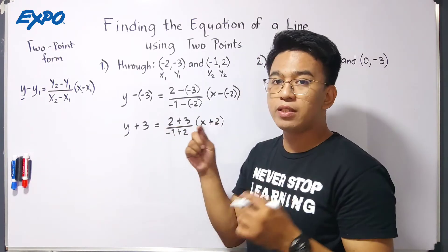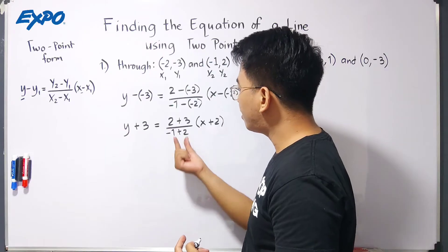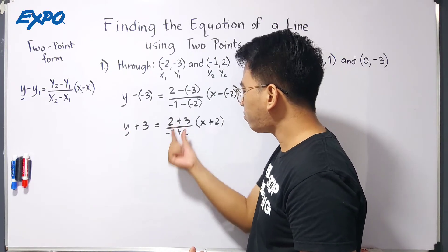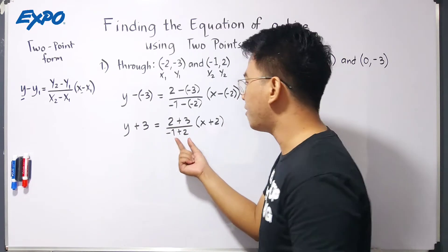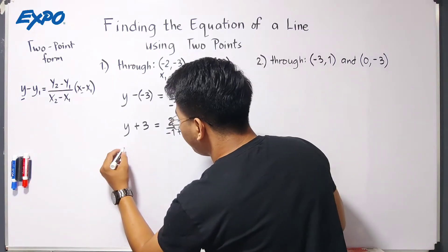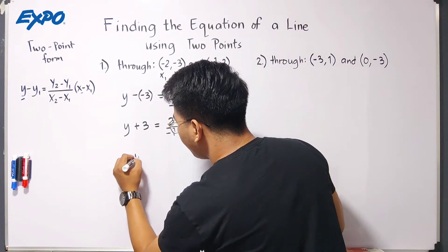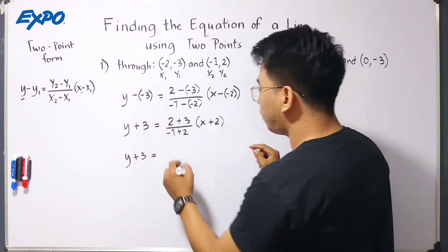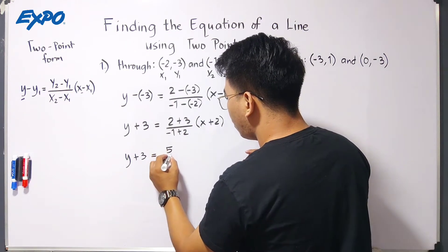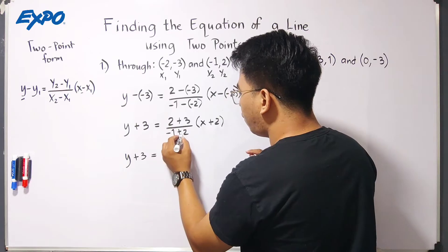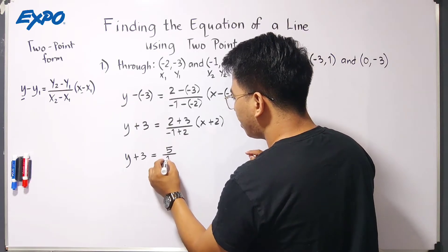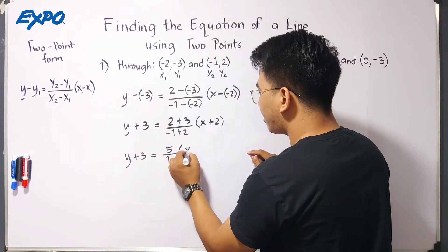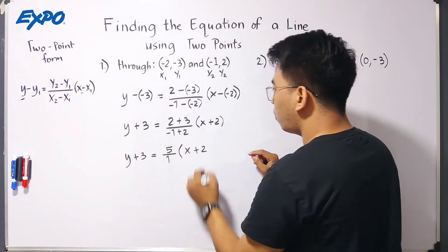What we need to do here before we start this, we will try to simplify first this fraction. So, we will copy y plus 3 equals 2 plus 3 is 5, over negative 1 plus 2, that is 1, times x plus 2.